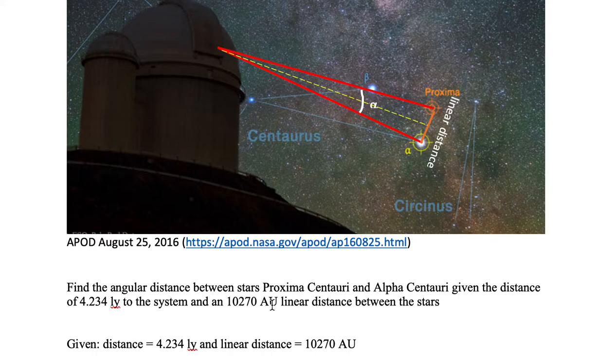And we are giving another number, 10270 AU, which is the linear distance between the two stars, the straight line distance between the two stars.